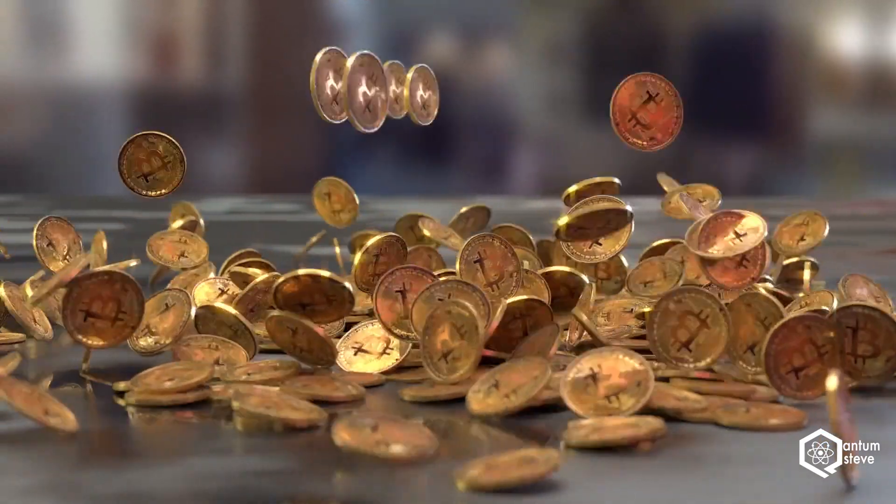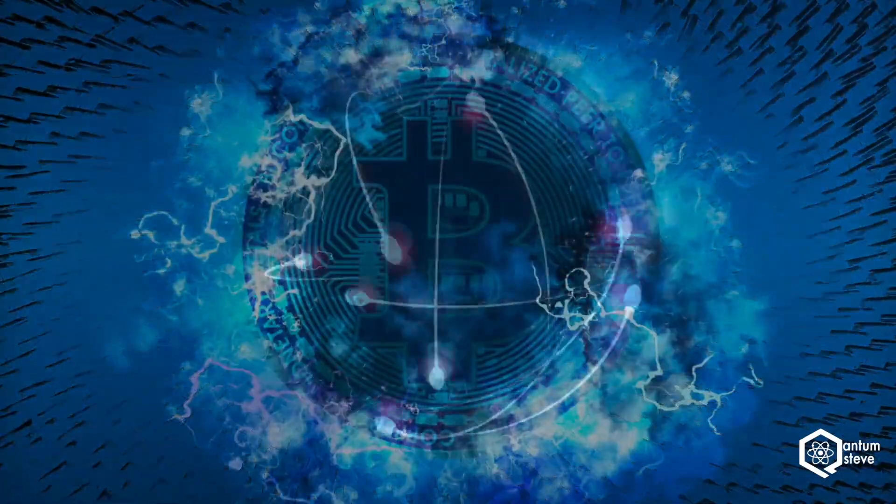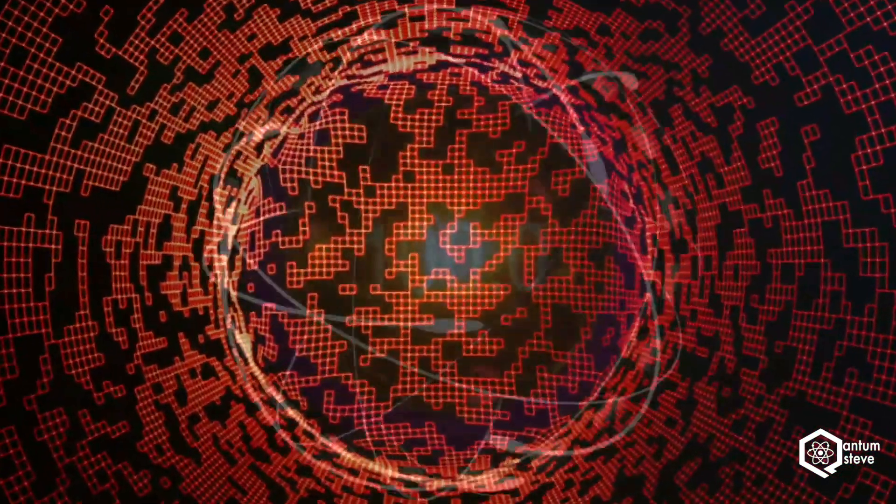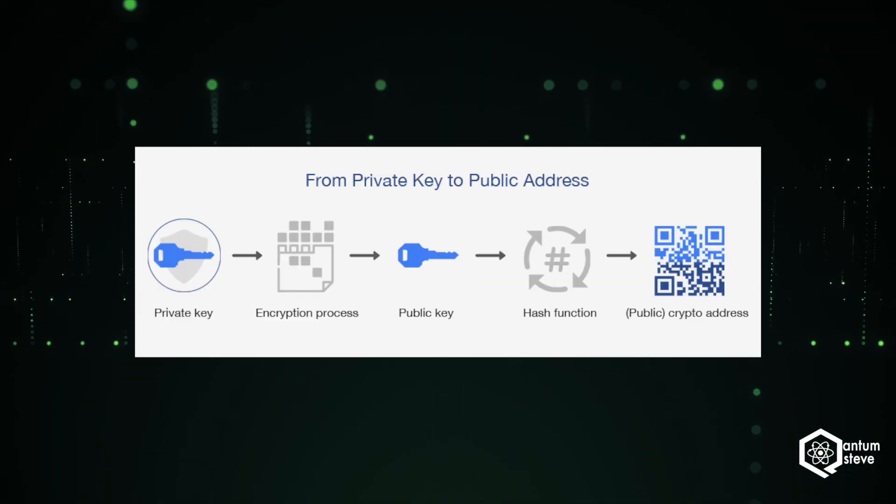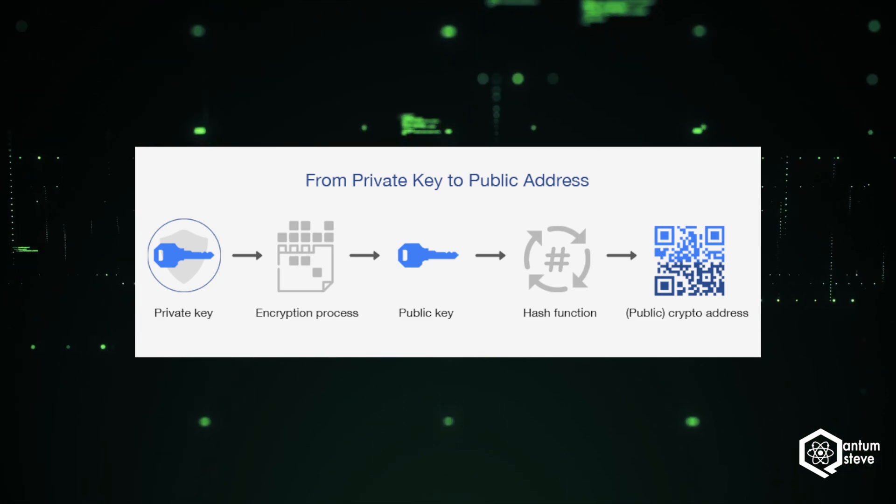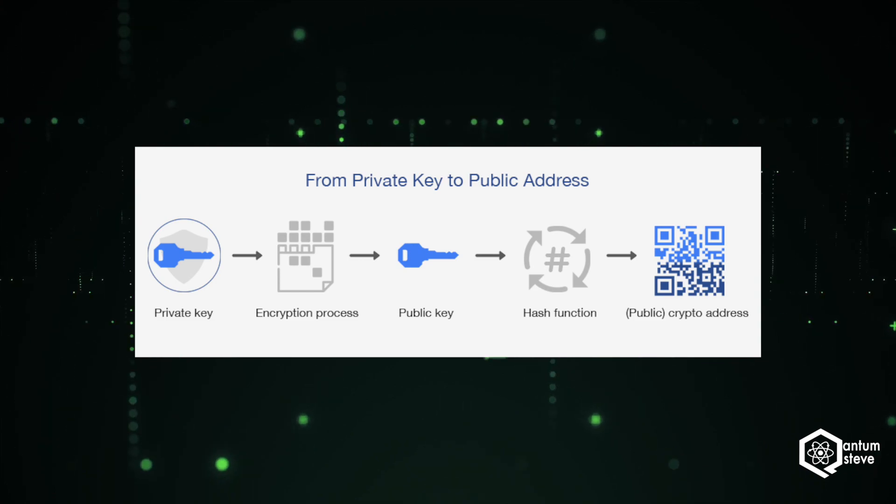If you own Bitcoin, it actually means that you own a private key to an address. The private key is a string of random numbers and letters that are used to sign transactions. If you pass the private key through a hash function, this creates the public key, which is used to verify that you own the private key to your address. Passing the public key through another hash function twice finally generates the address.